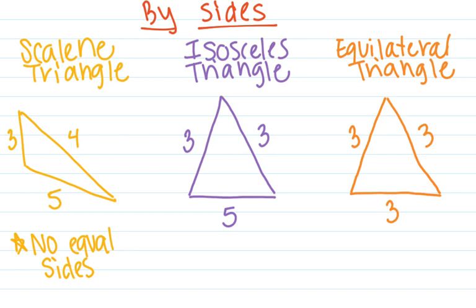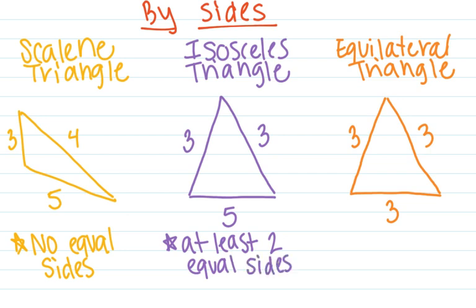This one in the middle is called an isosceles triangle. An isosceles triangle has at least two equal sides. We can see that because we have two sides labeled as three — so our sides are three, three, and five. The other way they will mark that those sides are congruent is with a little tick mark.